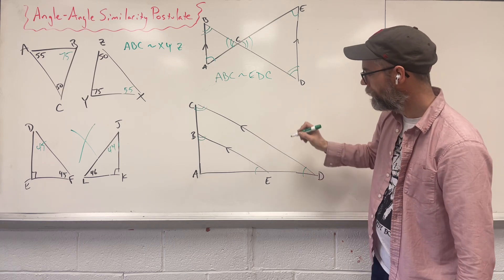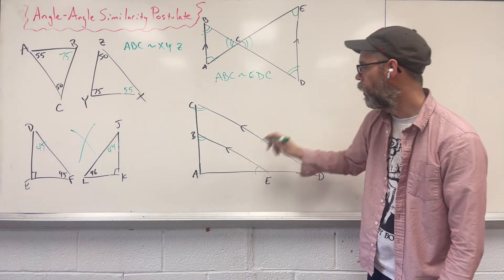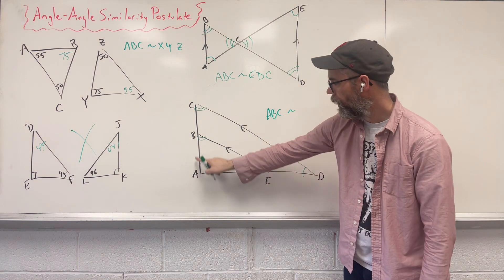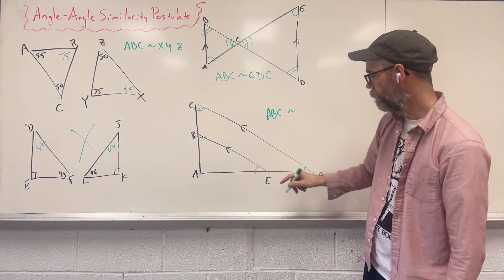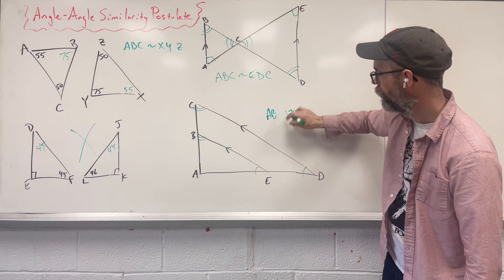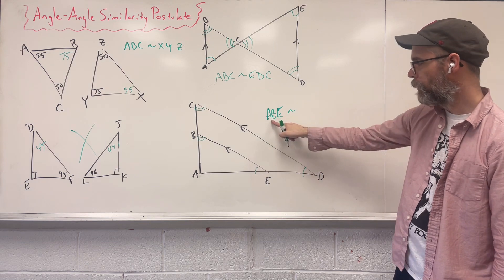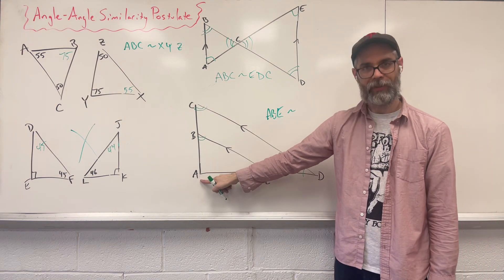So let's match these up. I'm going to say, I'm going to start with small. I'm going to say ABC is similar to, so we're going to go ABC. Nope, that is E. ABE is similar to what's in the same spot as A. A is in the same spot as A.